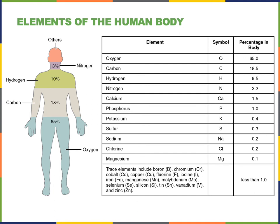The remaining portion of the body consists of smaller amounts of calcium, phosphorus, potassium, sulfur, sodium, chloride, and magnesium, and even smaller amounts of boron, chromium, cobalt, copper, fluorine, iodine, iron, manganese, molybdenum, selenium, silicon, tin, vanadium, and zinc.